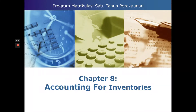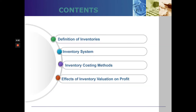Assalamualaikum and Salam Sejahtera. Today we are going to discuss Chapter 8: Accounting for Inventories. There are 4 subtopics in this chapter: Definition of Inventories, Inventory System, Inventory Costing Methods, and Effects of Inventory Valuation on Profit.